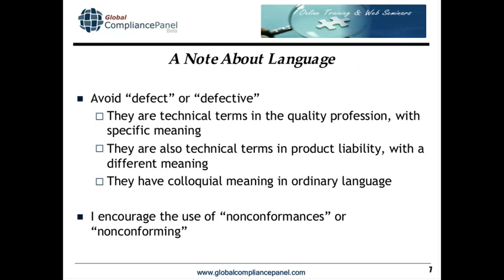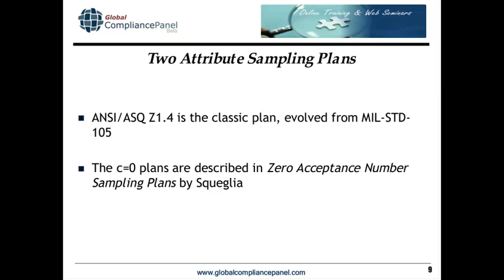Now, we need to talk about language because this is really important. I generally tell people to avoid the words defect and defective. These are technical terms in the quality profession with very specific meaning, but they're also technical terms in product liability law where they carry a very different meaning. If you ever find yourself in a situation where you are being sued, product liability attorneys will pounce on any use of the words defect and defective, even though you mean conforming or nonconforming as a quality professional. Wipe out defect and defective from your quality vocabulary and use conforming or nonconforming instead. Now, let's look at Z1.4 — the classic sampling plan.